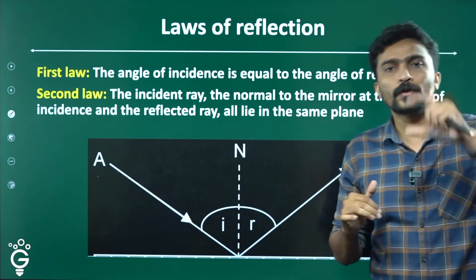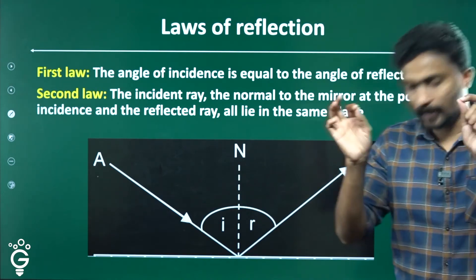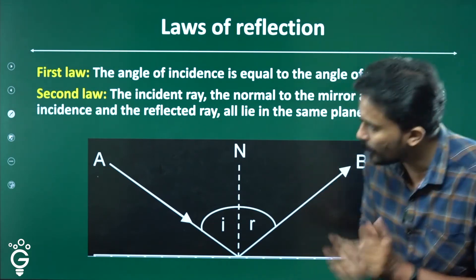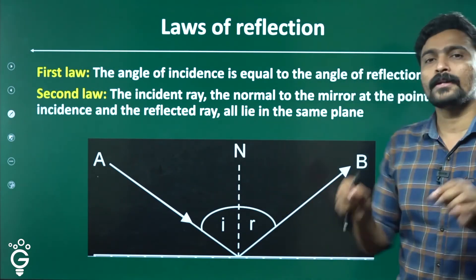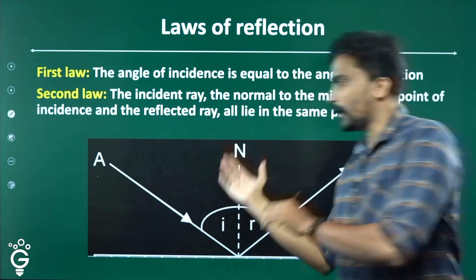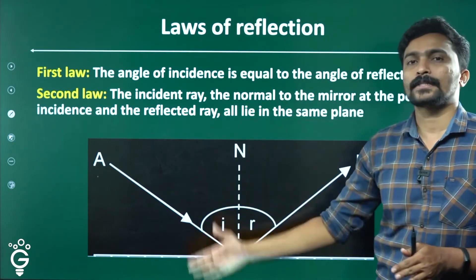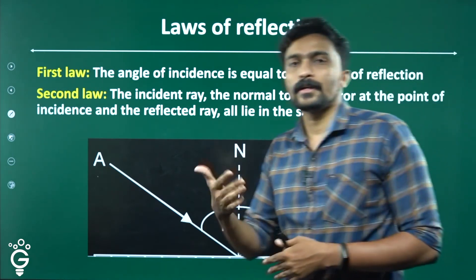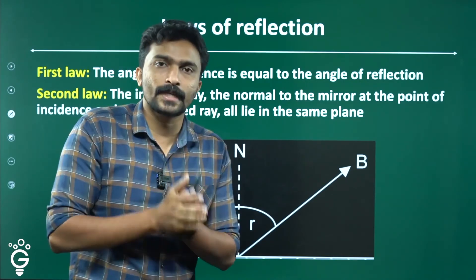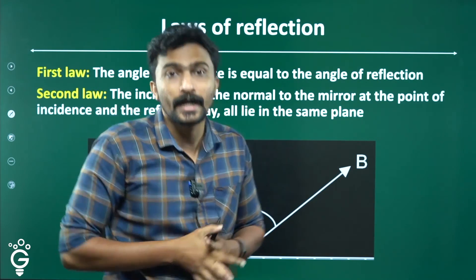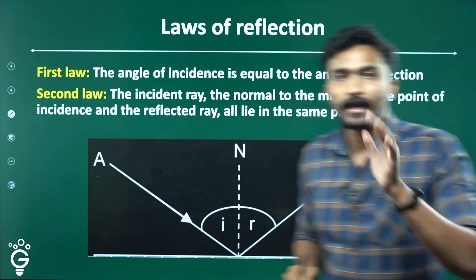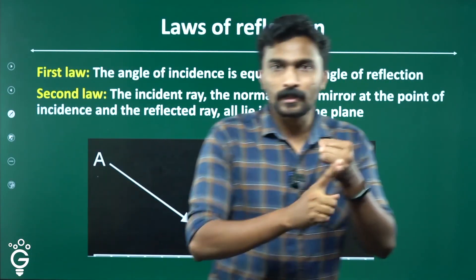The angle of incidence is equal to the angle of reflection. If we have completed diagrams: the incident ray, the normal to the mirror at the point of incidence, and the reflected ray all lie in the same plane. These three lines exist only in one plane — a two-dimensional plane. Reflection exists in one plane; if you focus on a light ray and its path, you can see the same plane, and the two angles are equal.